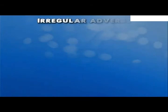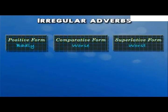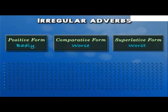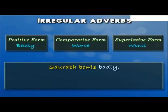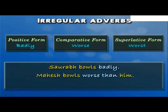In the case of irregular adverbs, let us take an example of the adverb badly. The word badly is being used as an adverb in the positive form. Mahesh bowls worse than him. Here, worse has been used as the comparative form of badly, as there is a comparison made in the sentence.